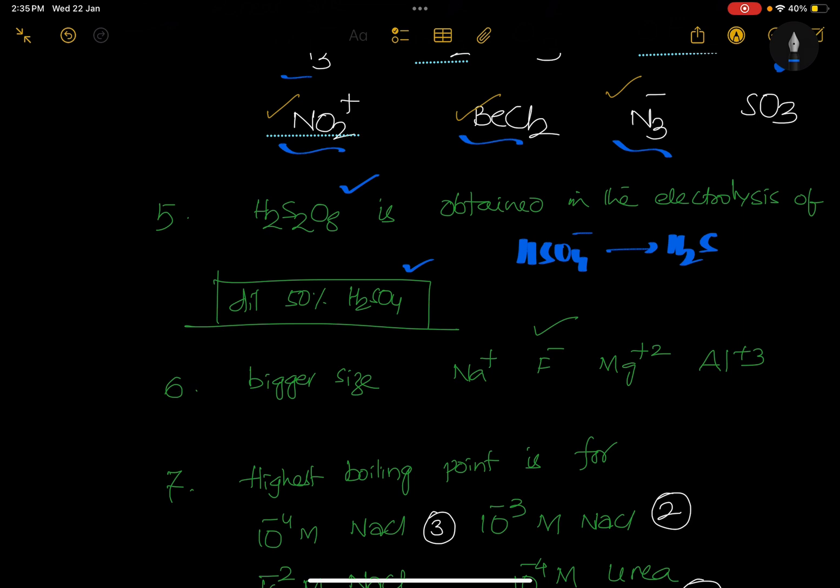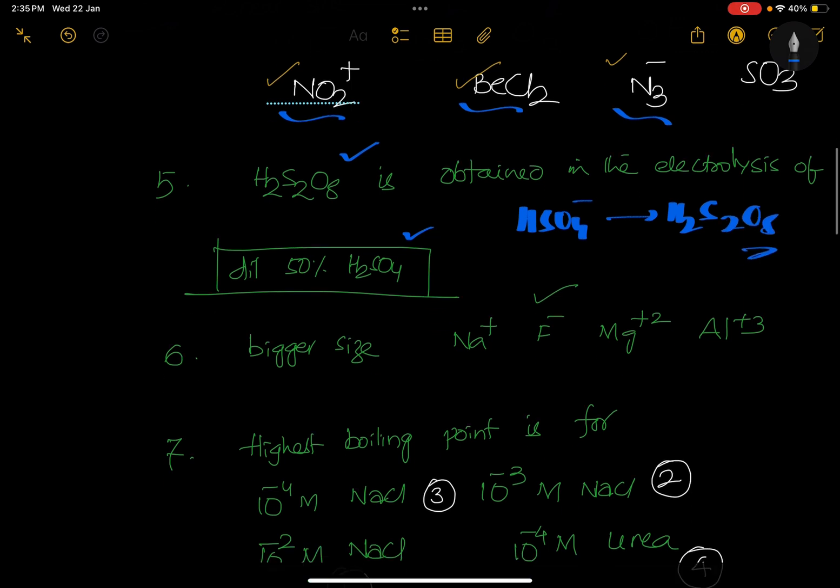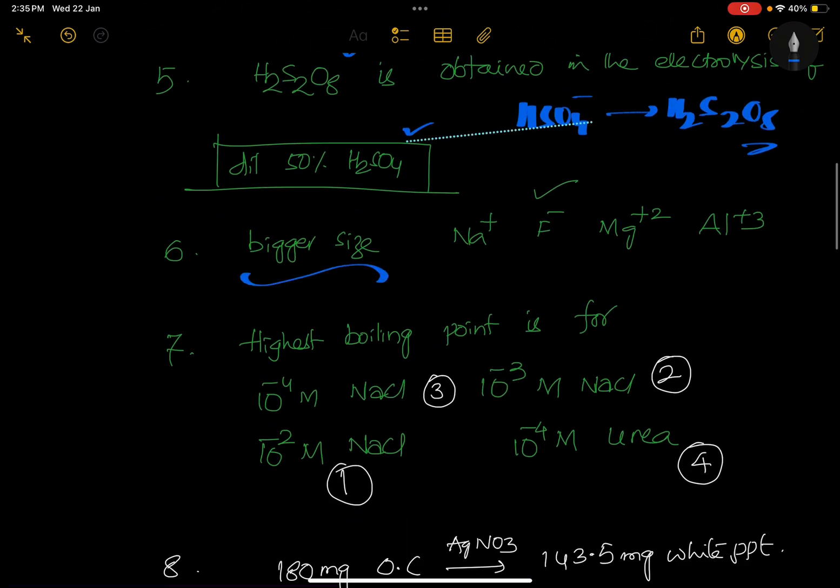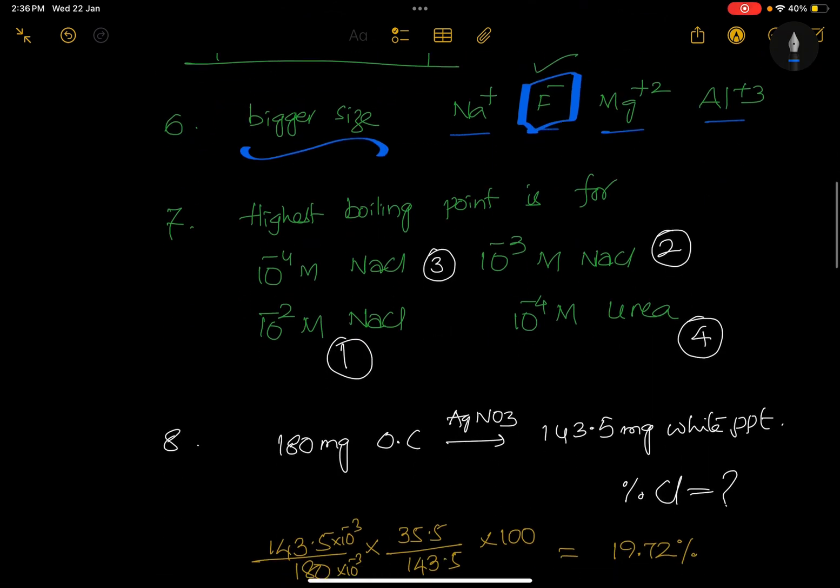Bigger size: again very simple question. Na+, F-, Mg+2, Al+3 - basic line of periodic table lesson. Anion is bigger when you compare with the isoelectronic cations. Highest boiling point is fourth, so this is from solutions lesson based on the i-factor.